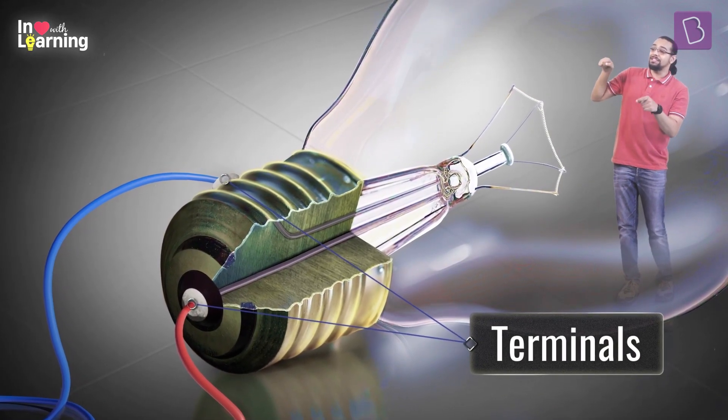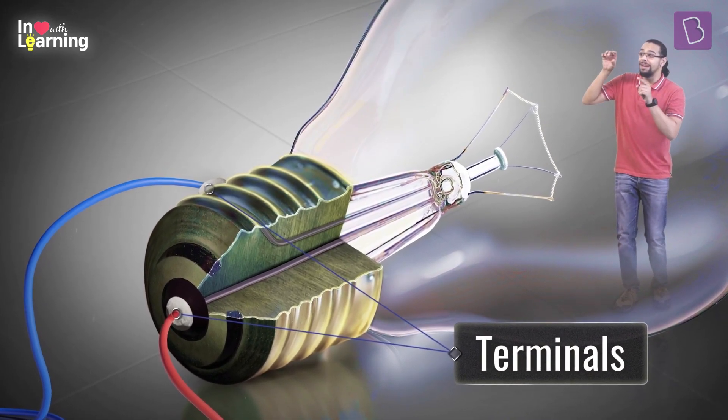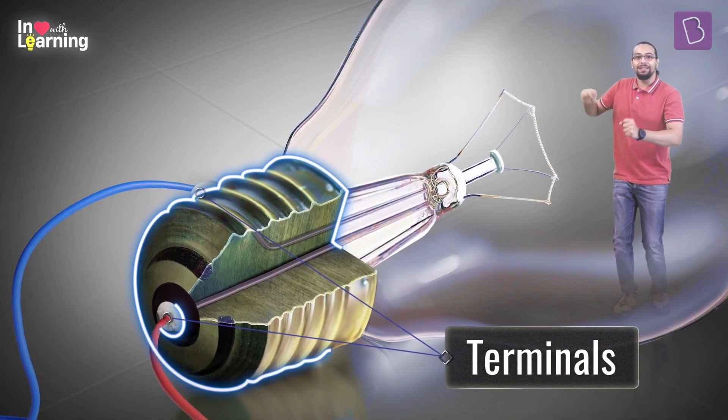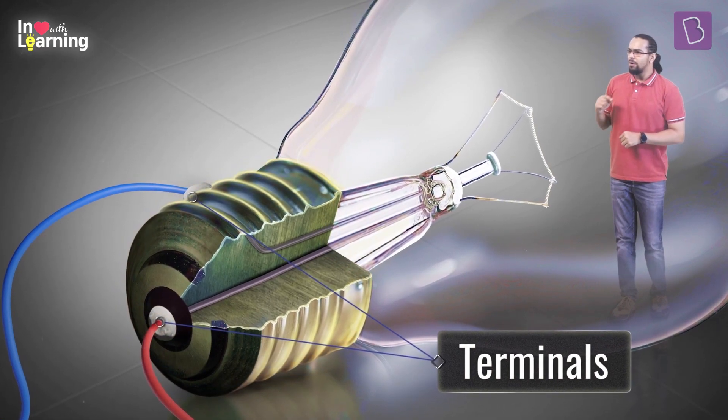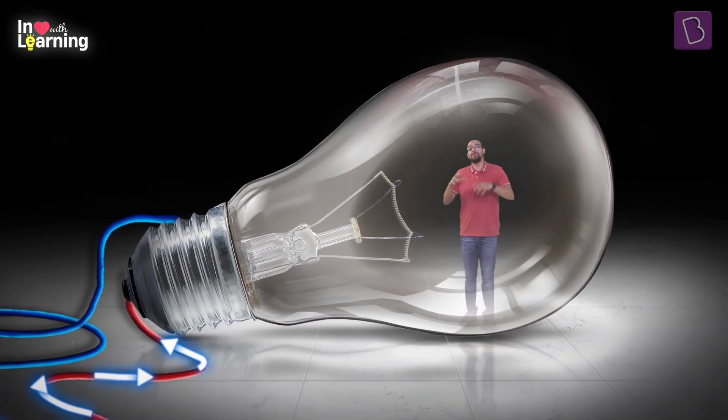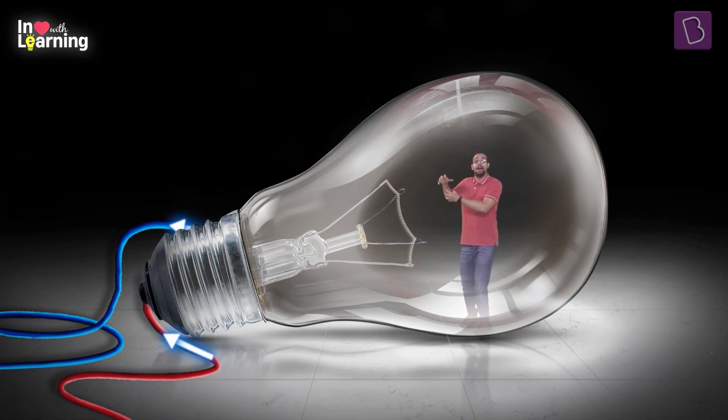Now, that and this together make the terminals of the bulb, which connect the filament to outside the bulb. Now, terminal is the place where electricity flows in and out of the bulb. These terminals are connected to a source of electricity.